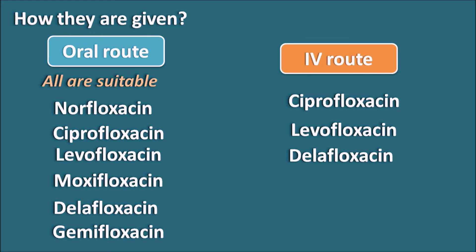Fluoroquinolones act by inhibiting both topoisomerase-2 and topoisomerase-4, thereby inhibiting DNA replication as well as release of newly formed DNA. They generally produce gastrointestinal side effects like nausea, vomiting, and diarrhea, and central side effects like headache, dizziness, and confusion. Some drugs produce arthropathy, particularly in those under 18 years, and phototoxicity on long-term use. Increasing the QT interval is an important concern, more pronounced with moxifloxacin. Fluoroquinolones produce many drug interactions by inhibiting the cytochrome P450 system.